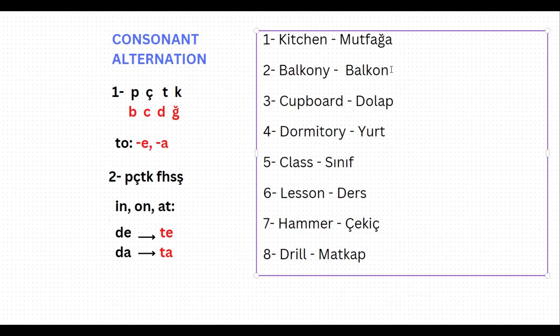The second word is 'balcony,' which is 'balkon' in Turkish. If you want to say 'to the balcony,' it should be 'balkon-a.' The last letter of the word is n. Will it change? It will not, because it's not one of peçeteğe, so it will stay as it is — there is no change. To the balcony: balkona.